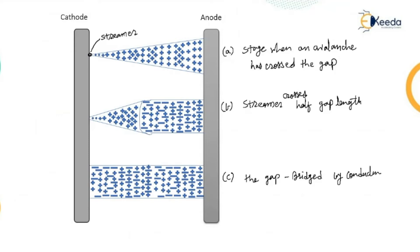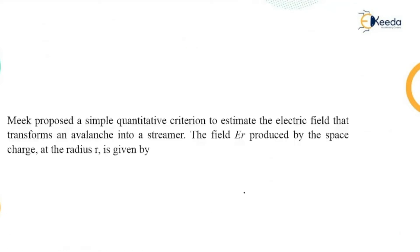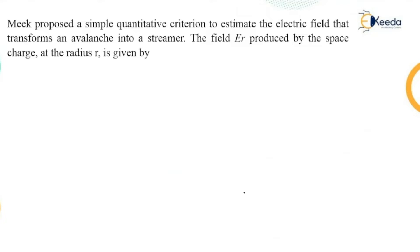That conducting channel means nothing but the conversion of the insulating gas into the conducting gap — that conducting gas becomes the conducting medium. This is all about the streamer theory. The streamer theory is one in which Meek has proposed a simple quantitative criteria related to the estimation of the electric field.